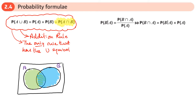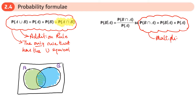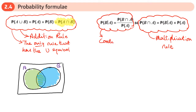The second rule is the multiplication rule. This rule comes from the conditional probability rule. If you take the conditional rule and multiply both sides by the probability of A, then you get the multiplication rule. So these are two new rules we have now.